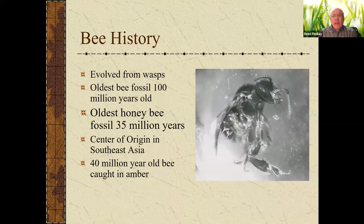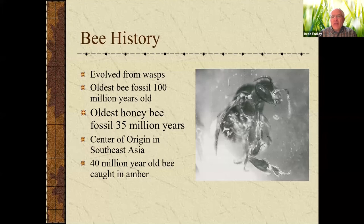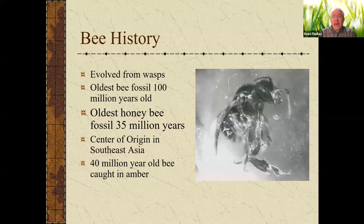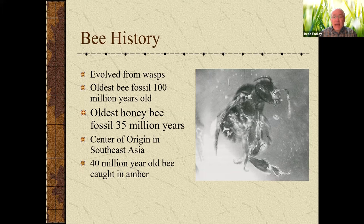Bees have been around for eons. They evolved from wasps — they're in that same Hymenoptera order. If you go back through the fossil record, the honeybees found in amber are very, very ancient and anatomically very similar to the bees we have today. So they haven't evolved much, which means they're really adapted for life on this planet — true of most insects. The oldest honeybee fossils are 35 million years old, and they originated in Asia, Southeast Asia.